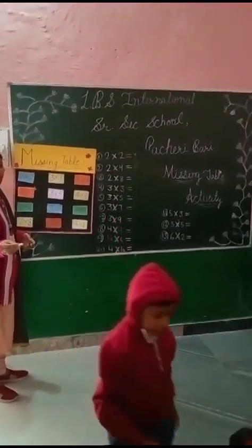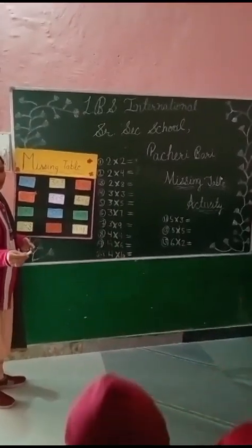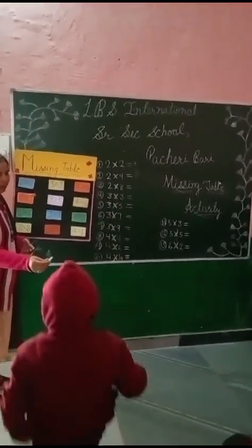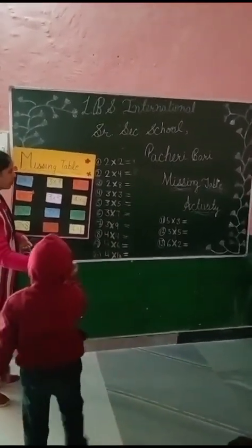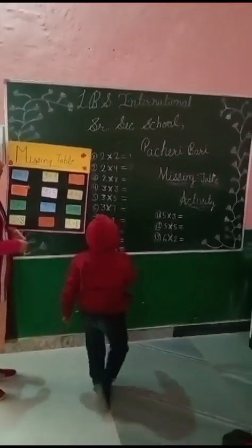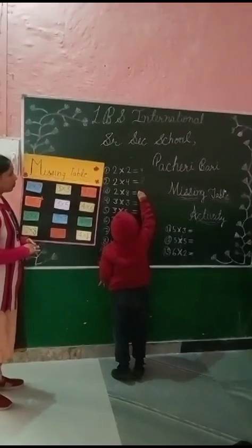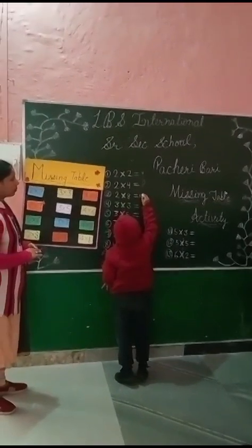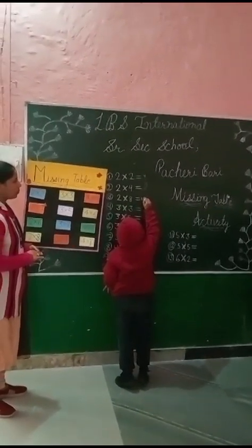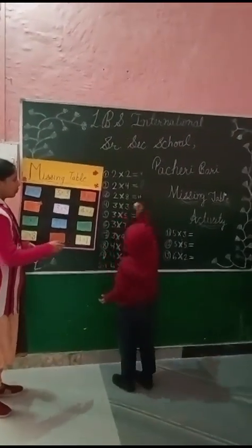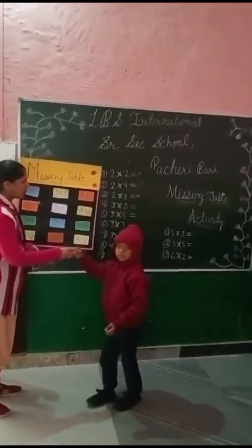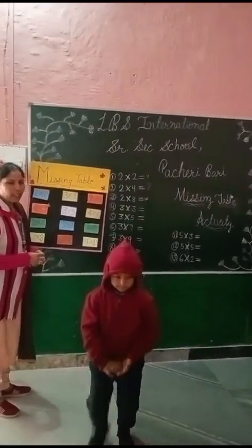You, come here. Two multiply eight. Sixteen. Very good. Right. Next.